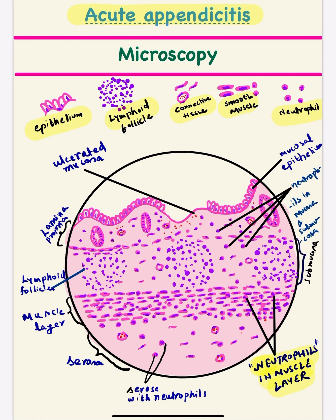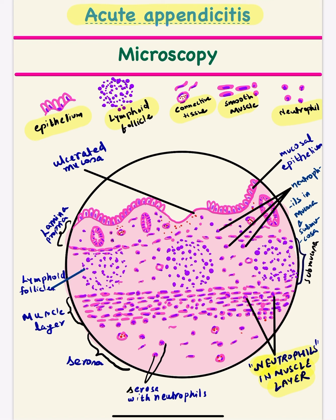For drawing the diagram of appendicitis, you need to know: first, how to make the epithelium; second, the lymphoid follicle — you draw it as a circle with lymphoid cells; third, connective tissue, which you will make in the lamina propria, submucosa, and serosa; and fourth, smooth muscle cells — they are spindle-shaped, cigar-shaped, with a nucleus having rounded ends, used for the muscularis propria.